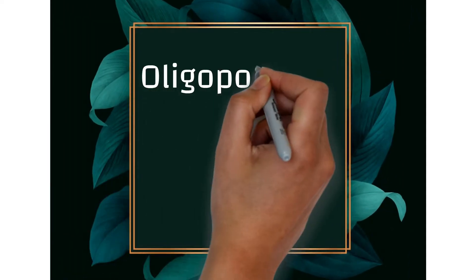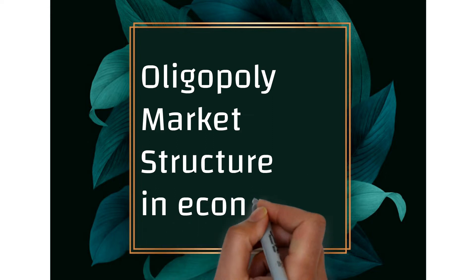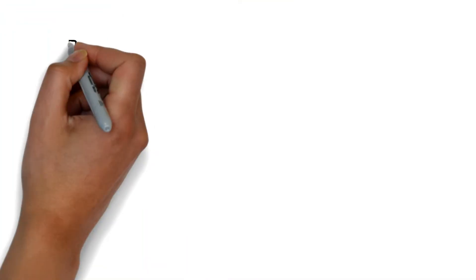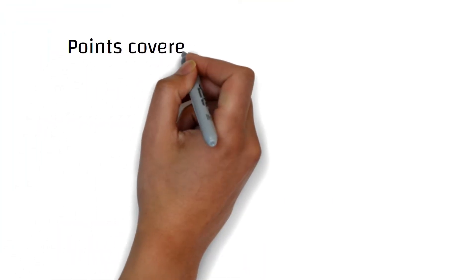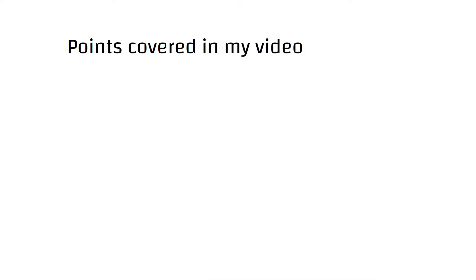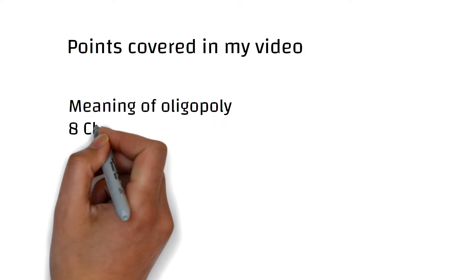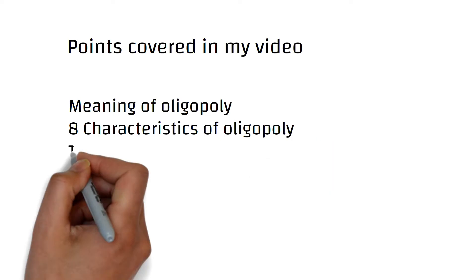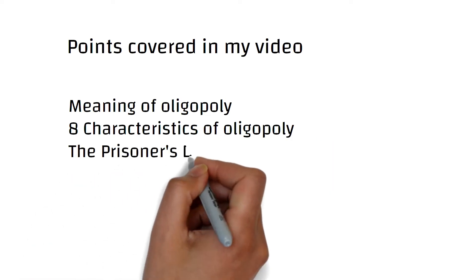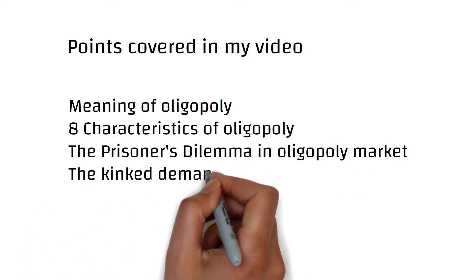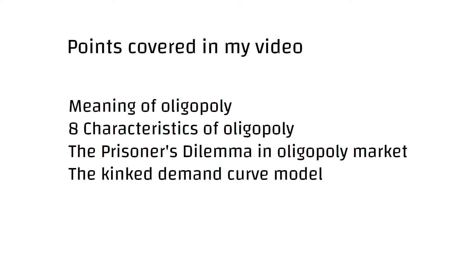Hello friends, today we are going to understand oligopoly market structure in economics in detail with different examples. I have covered the following points in my video: meaning of oligopoly, characteristics of oligopoly, the prisoner's dilemma in oligopoly market, and the kinked demand curve model. So let us start with the meaning of oligopoly.